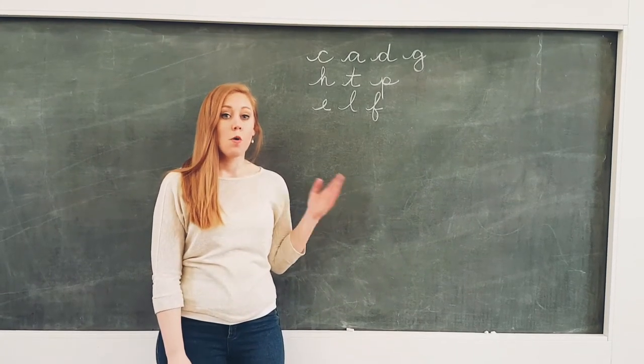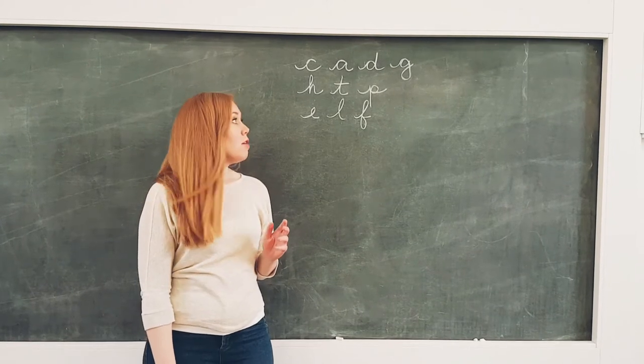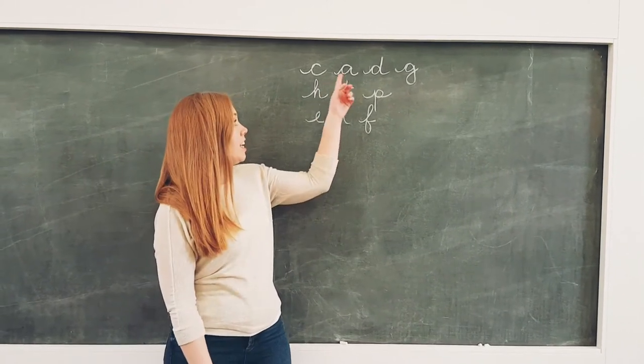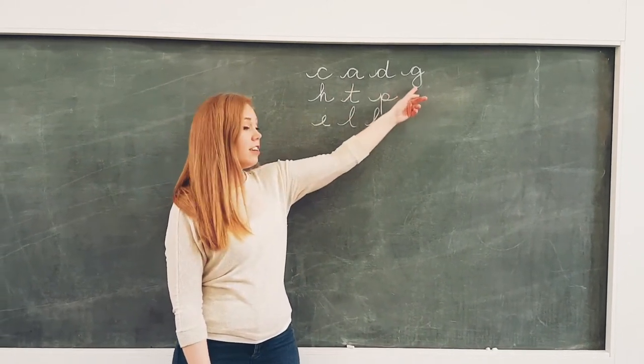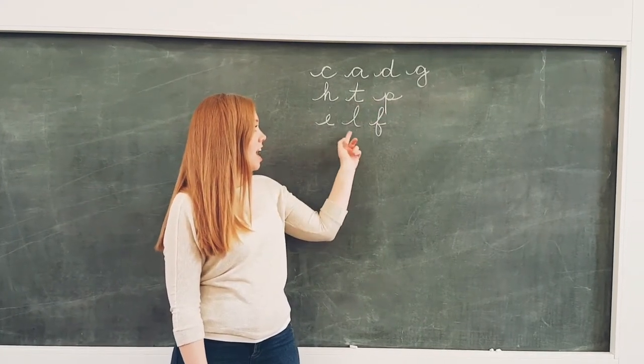And welcome back to History at Home. We're going to be continuing our way through the alphabet, working on our cursive writing. Remember last week when we worked on C, A, D, and G? We then went to H, T, P, and E, L, F.